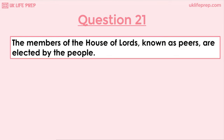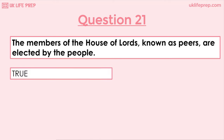Question 21: The members of the House of Lords known as Peers are elected by the people. True or false? This statement is false. Members of the House of Lords, or Peers, are appointed by the monarchy on the advice of the Prime Minister and are not elected by the people.